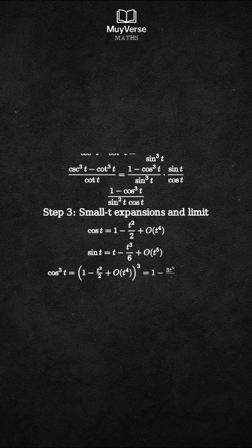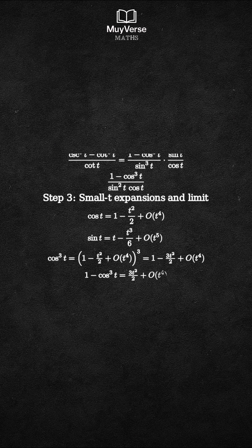Compute cos³t, that is approximately 1 - 3t²/2 plus higher order. Therefore, 1 - cos³t is approximately 3t²/2 plus higher order.